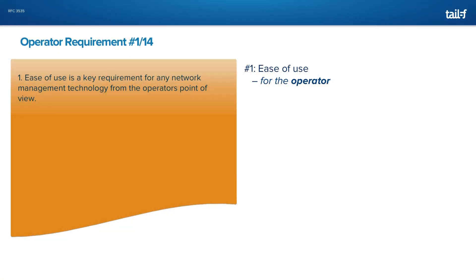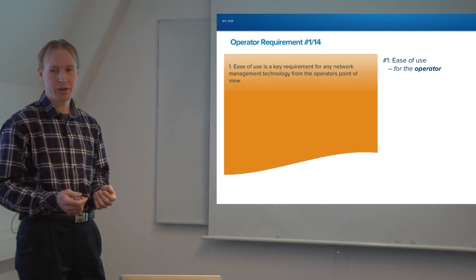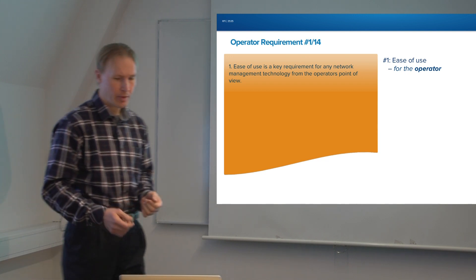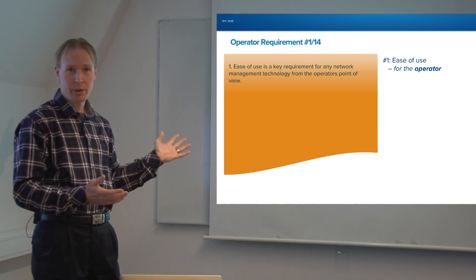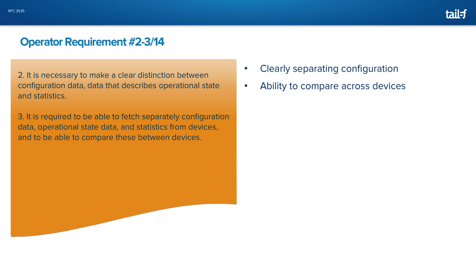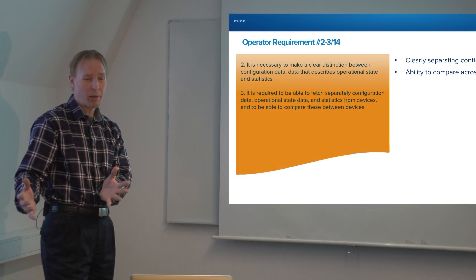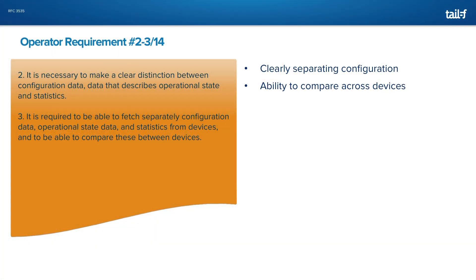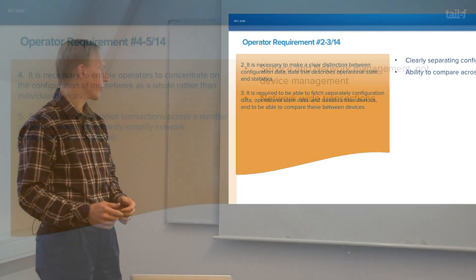The number one requirement from operators is that it's got to be easy to use the management protocol. We have SNMP — Simple Network Management Protocol — but SNMP is simple to implement, not easy to use, especially not for configuration. Operators say you've got to reverse that: we don't care if it's going to be difficult to implement, but it's got to be easy to use. Another requirement: clearly separate configuration from non-configuration items. In SNMP this is not clear at all, which makes it hard to take a backup of configuration and restore it later, and also makes it very difficult to compare the configuration of one device with another.